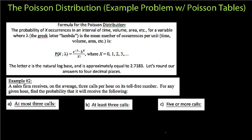Hello, YouTube. This is an extension of my last video in which I introduced the audience to the Poisson distribution. What we're going to do in this video is work through an example in three different parts to highlight some probabilities that you'll be asked to find, including phrases like 'at most' or 'at least.' So let's revisit the Poisson distribution.